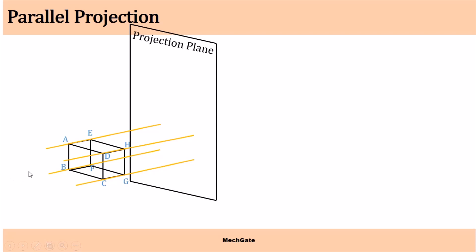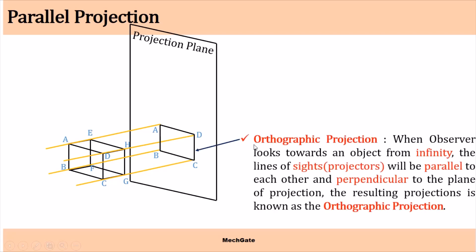When the observer looks from this direction, he can see the face A B C D — this is the projection of this rectangular block when we see from the front. Here the projector is making an angle of 90 degrees with the projection plane, so this type of projection is called orthographic projection — when the projector line makes an angle of 90 degrees with the projection plane.